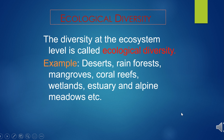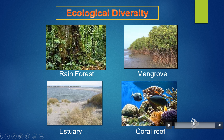The diversity present at the ecosystem level is called ecological diversity. At the ecosystem level, India — with its deserts, rainforests, mangroves, coral reefs, wetlands, estuaries, and alpine meadows — has greater ecosystem diversity than a Scandinavian country like Norway. This means our country has many different types of habitats. In this picture we can see different types of habitats: rainforests, mangroves, estuaries, and coral reef areas.